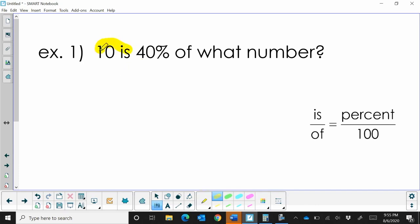So 10 is the 'is' part. 10 is what? 40%. So there's our percentage of what number. We don't know this part, we don't know the what, or the of. So that's the part that's going to be our unknown.